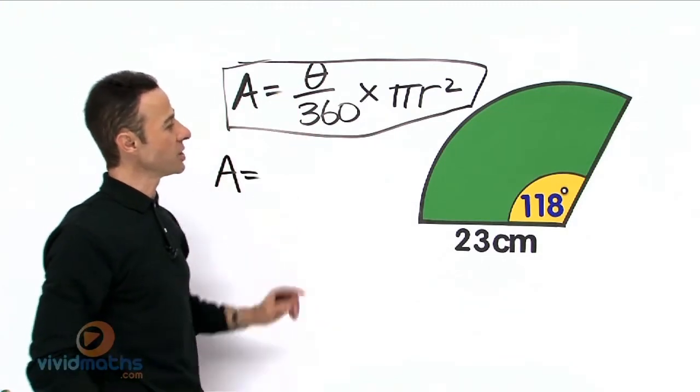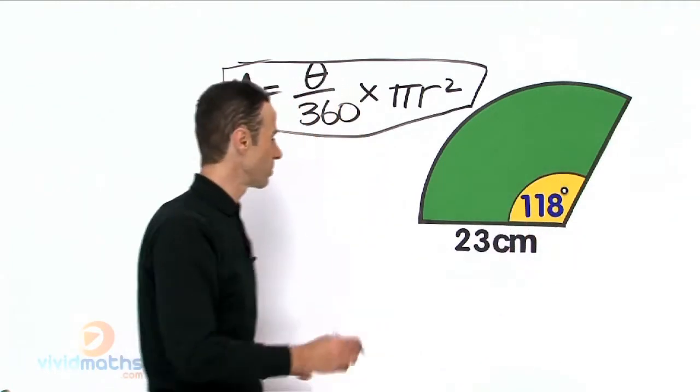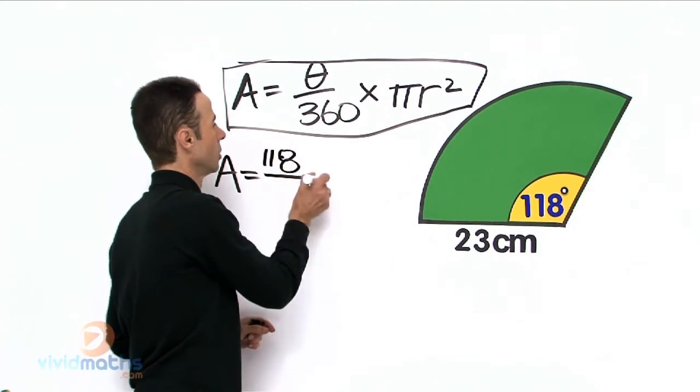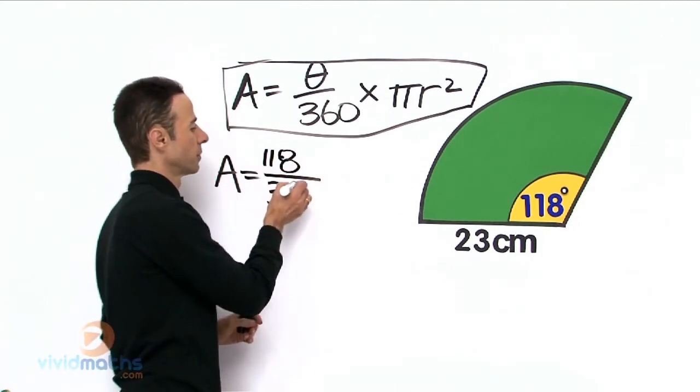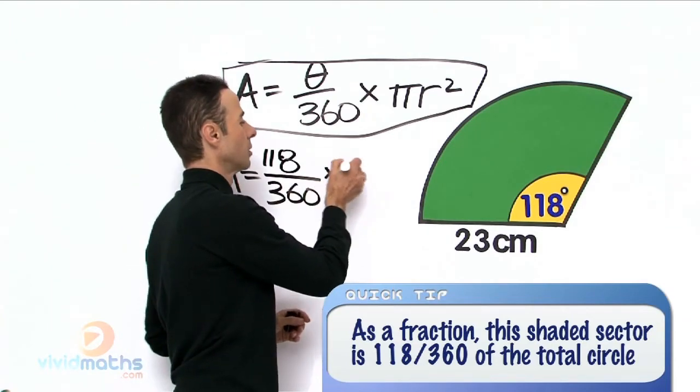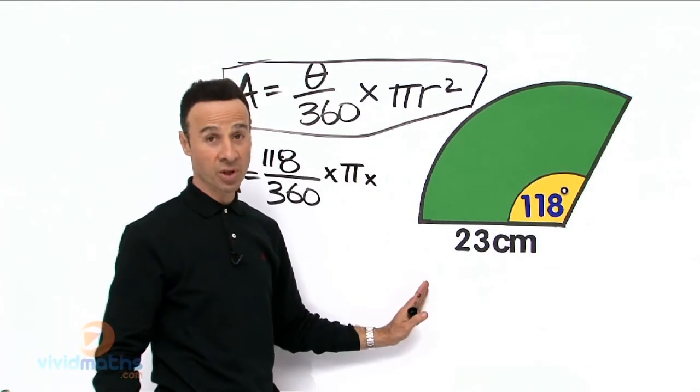So theta on 360—theta happens to be 118 degrees, okay let's put that in—all over a total of 360 times pi. And the radius is 23 centimeters and we are going to square that.